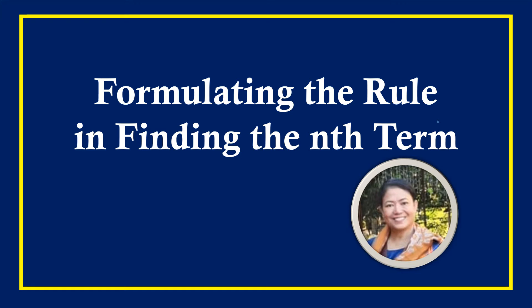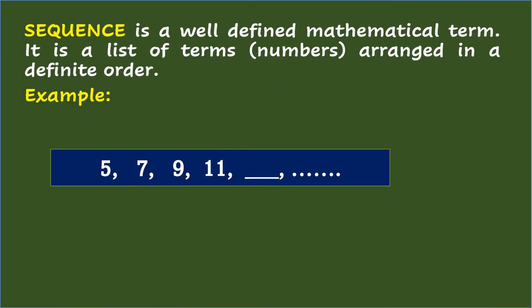Formulating the Rule in Finding the Nth Term. Let's start the lesson with the definition of sequence. A sequence is a well-defined mathematical term — a list of terms or numbers arranged in a definite order. For example, 5, 7, 9, 11, a missing number, and so on is a sequence.